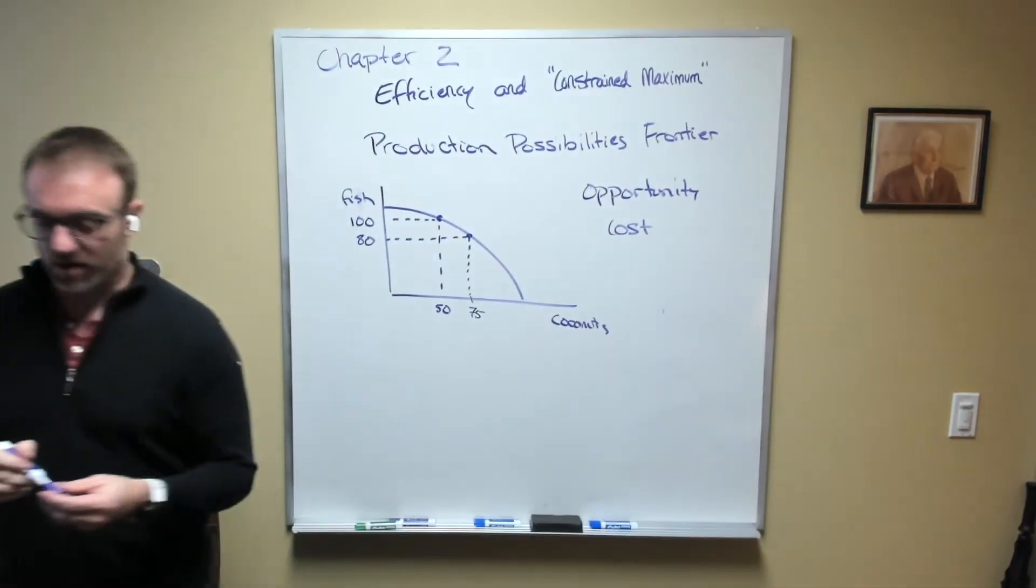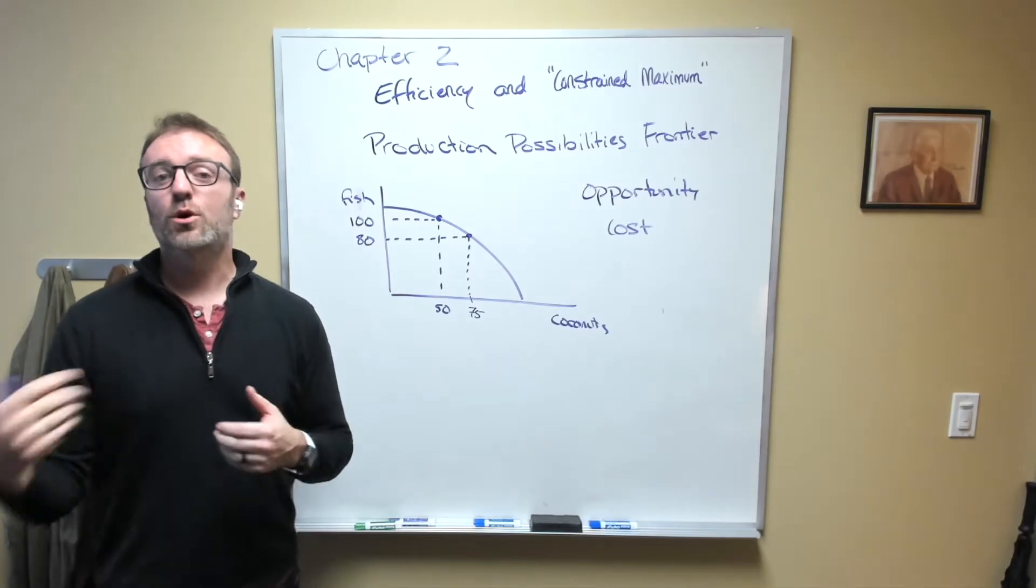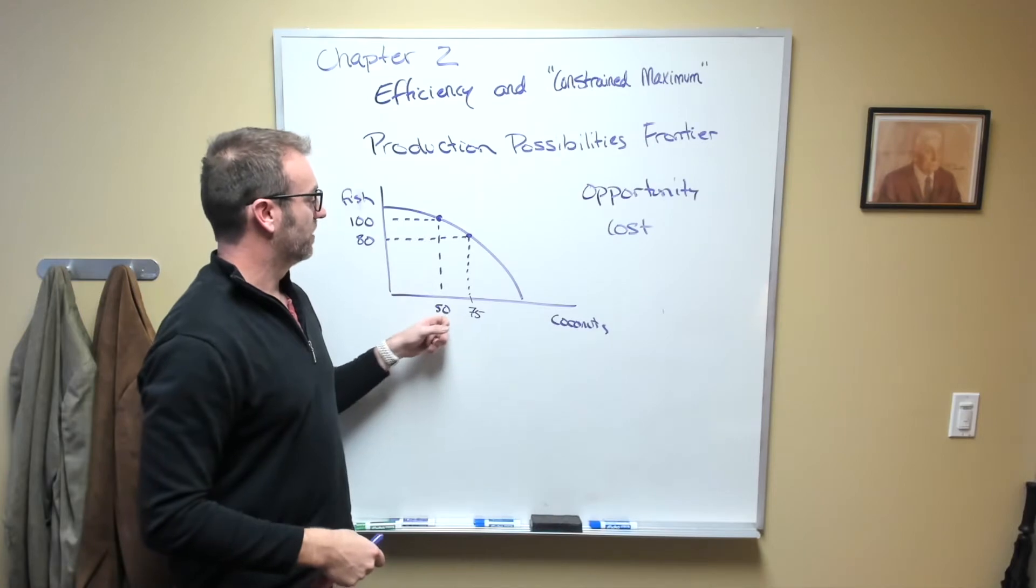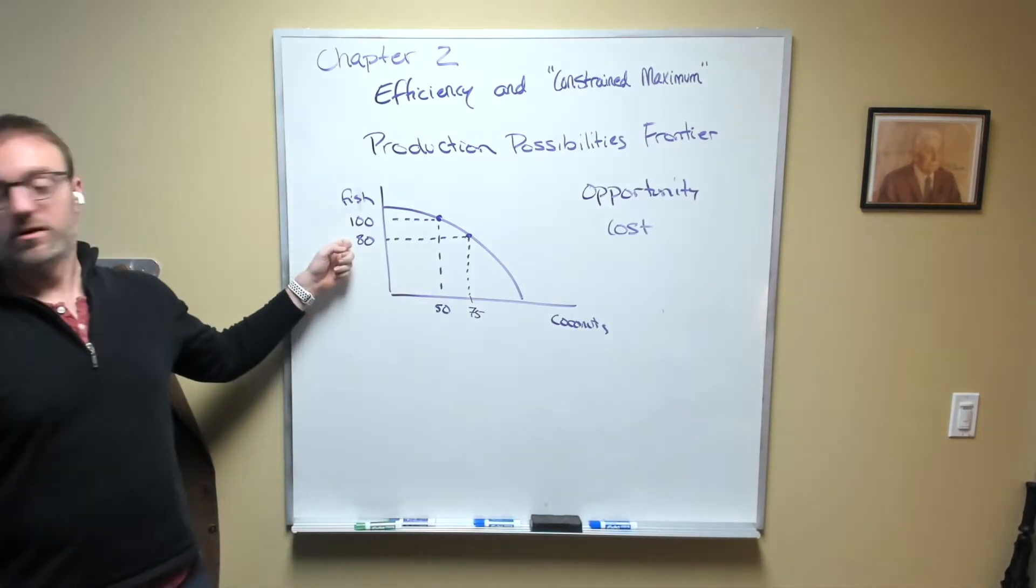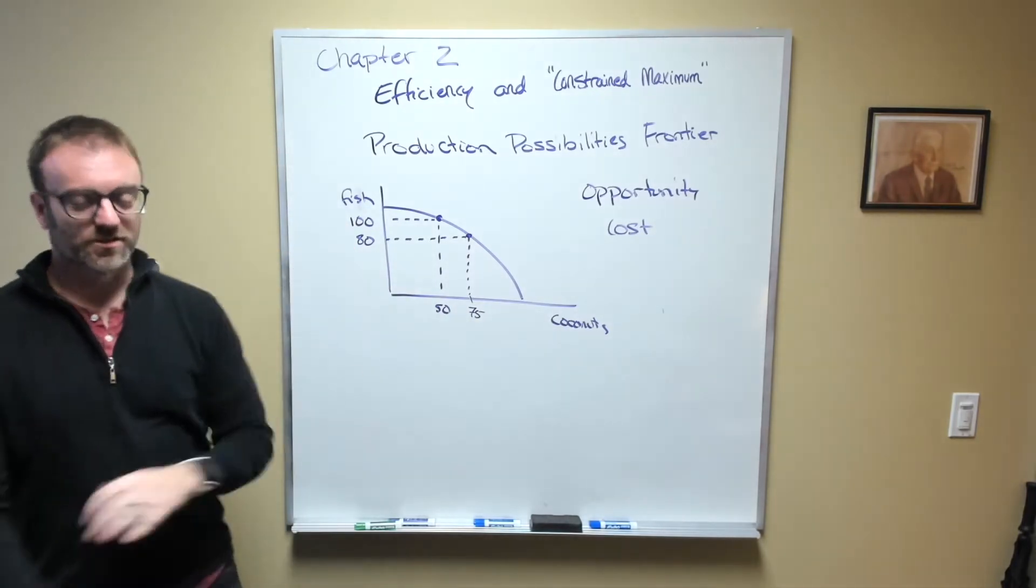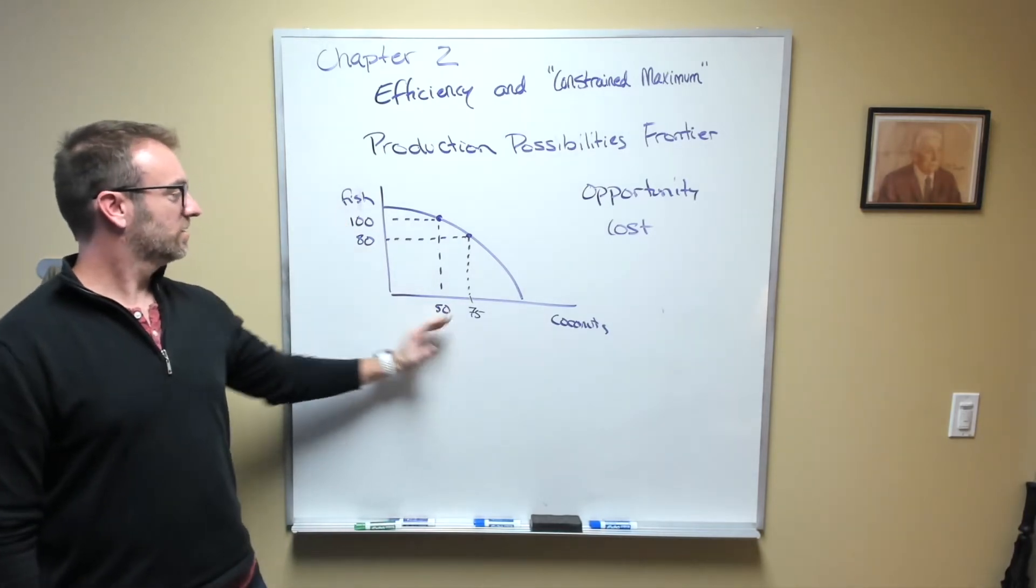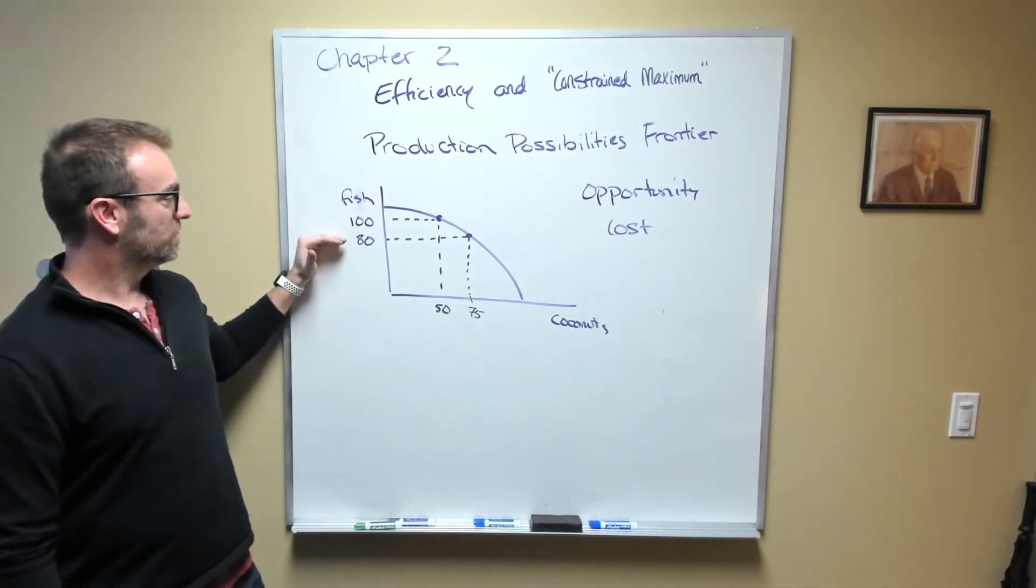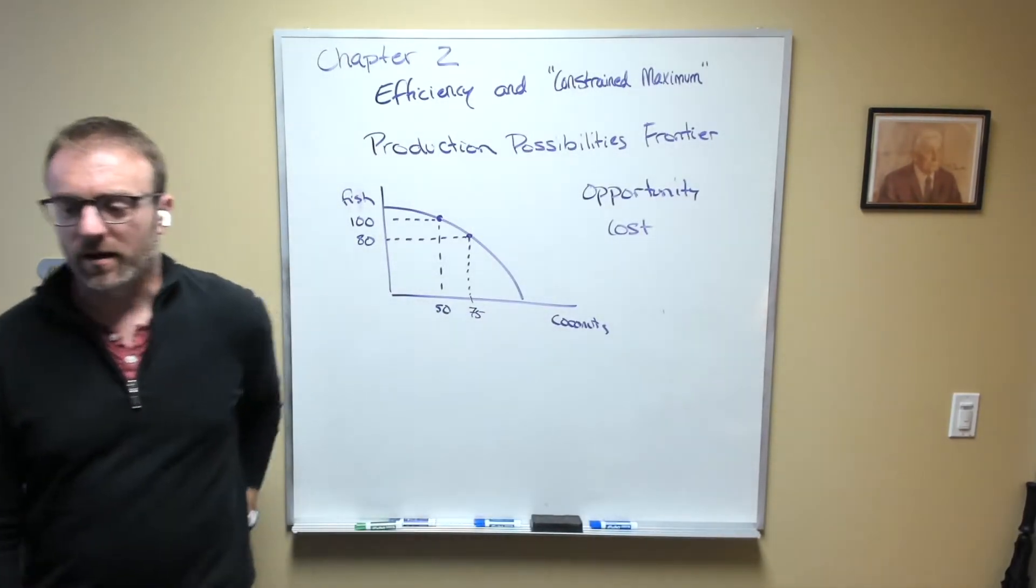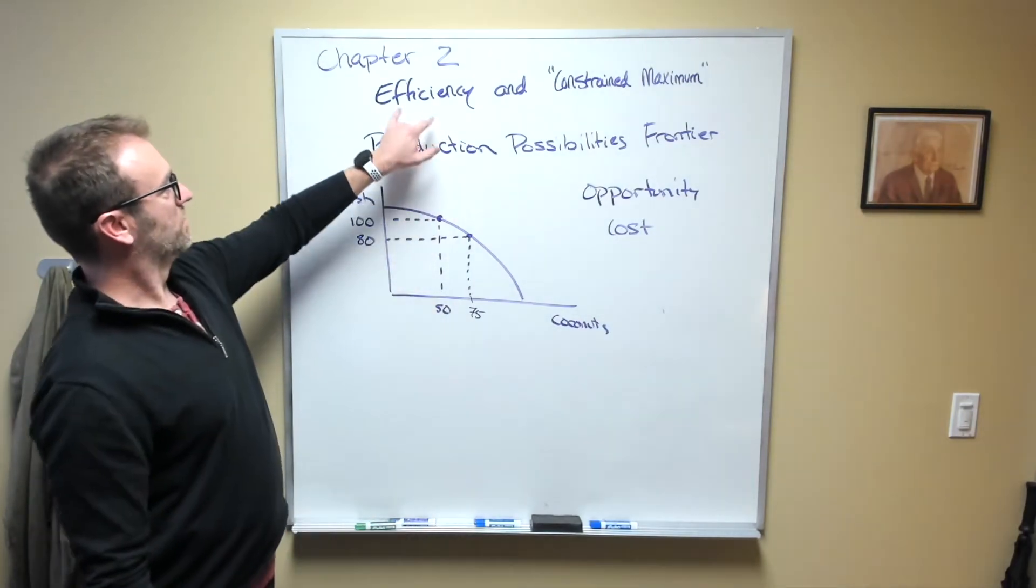The opportunity cost of any action is the foregone alternative that you could have pursued. In this case, the opportunity cost of these 25 coconuts is the 20 fish. If I'm currently at 100 fish and 50 coconuts, I can reduce my fish by 20 to increase my coconuts by 25. Now we should get into a discussion between efficiency and maximization.